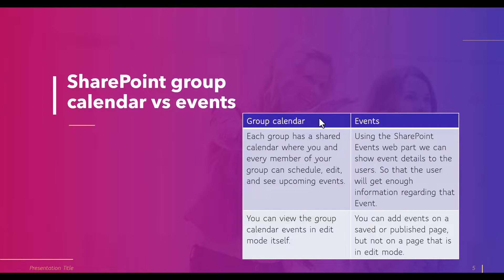These are the two web parts: one is the group calendar web part and the other is the event web part. The main difference is that with the group calendar, when we create site pages a shared calendar is provided by default and members can easily schedule, edit, and see upcoming events. In the event web part, we can only show event details. Also, in the group calendar web part we can view upcoming events in edit mode, but in the event web part we cannot — the page must be saved or published first.